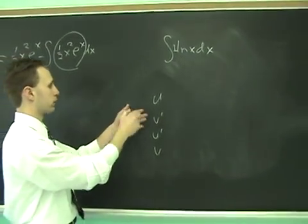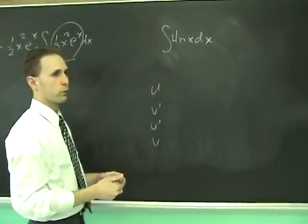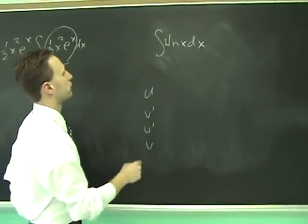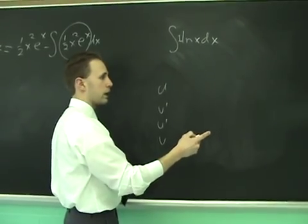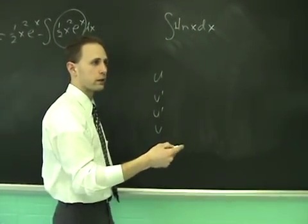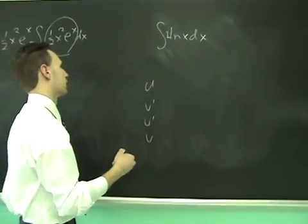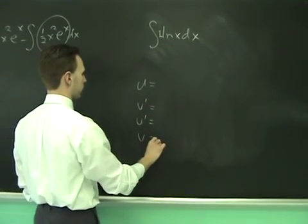So one is going to be either u or v-prime, and ln x is going to be the other one. Which way should we go? Well, you notice if you anti-differentiate one, that'll give you x. And if you differentiate ln x, it gives you one over x. Their product is one, which is easy to integrate. So that's how you know how to make your choice of u and v-prime.